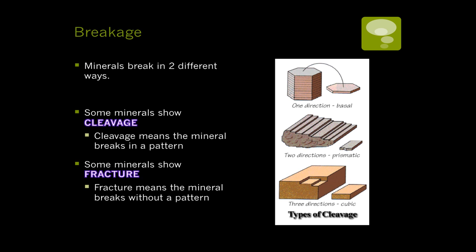How a mineral breaks is defined either as cleavage or fracture. Cleavage is when a mineral breaks along a line of weakness into a pattern — if it breaks in the same shapes over and over again, it has cleavage. Fracture is the opposite, meaning a mineral crumbles or breaks randomly. This is the most difficult property to identify, since usually you can't smash the rock into pieces to see how it breaks.